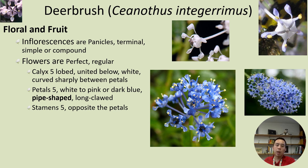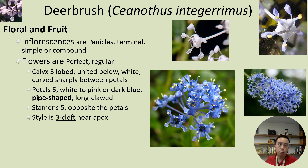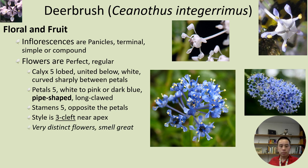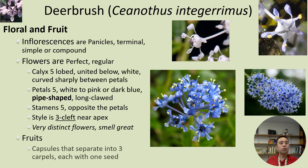It often has five stamens opposite from the petals, and the styles are three-cleft near the apex — cleft being a way to say lobed for styles. It has very distinctive-looking flowers and a very distinct smell as well. The fruits often occur in capsules that separate into three carpels, each with one seed, as they mature.